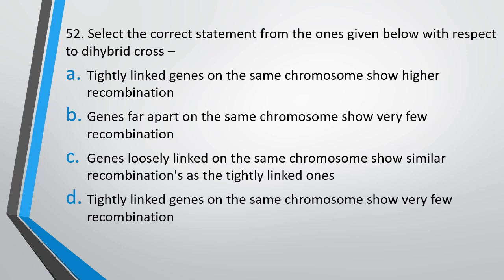Question No. 52: Select the correct statement from the ones given below with respect to dihybrid cross. Tightly linked genes on the same chromosome show higher recombination. Genes far apart on same chromosome show very few recombination. Genes loosely linked on the same chromosome show similar recombination as the tightly linked ones. Tightly linked genes on the same chromosome show very few recombination. Correct answer is option D. Tightly linked genes on the same chromosome show very few recombination.